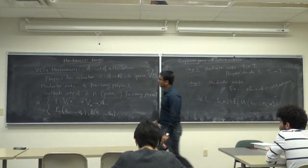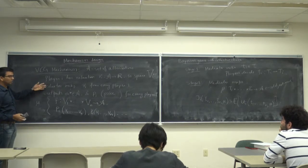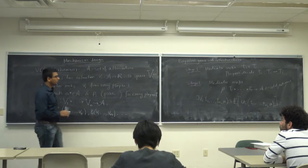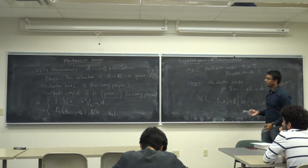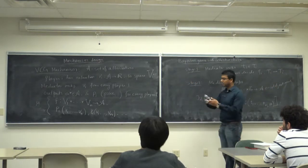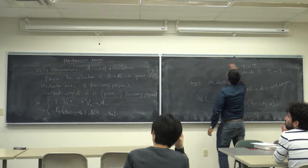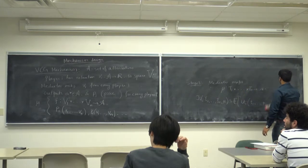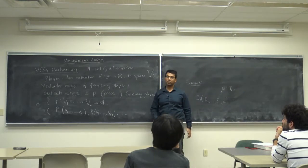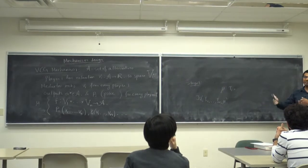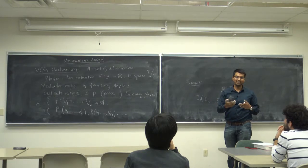VCG stands for Vickrey, Clark, and Groves. Vickrey wrote a foundational paper around 1961 on auction theory and won a Nobel Prize for it. Notably, the Nobel Prize was announced on day one, but Vickrey died of a heart attack on day four — he knew he had won but did not live to receive it from the committee.